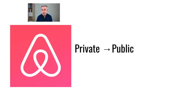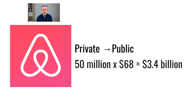This process of going from a private company to one listed on a stock exchange is called an initial public offering, and it can raise a lot of capital. In Airbnb's case, they issued 50 million shares at $68 per share, raising about $3.4 billion, though fees can make this quite expensive.